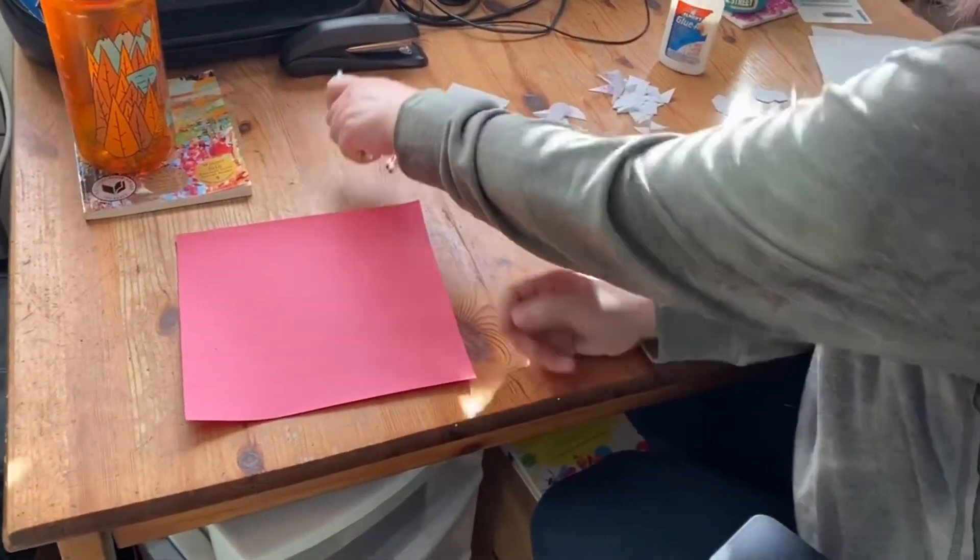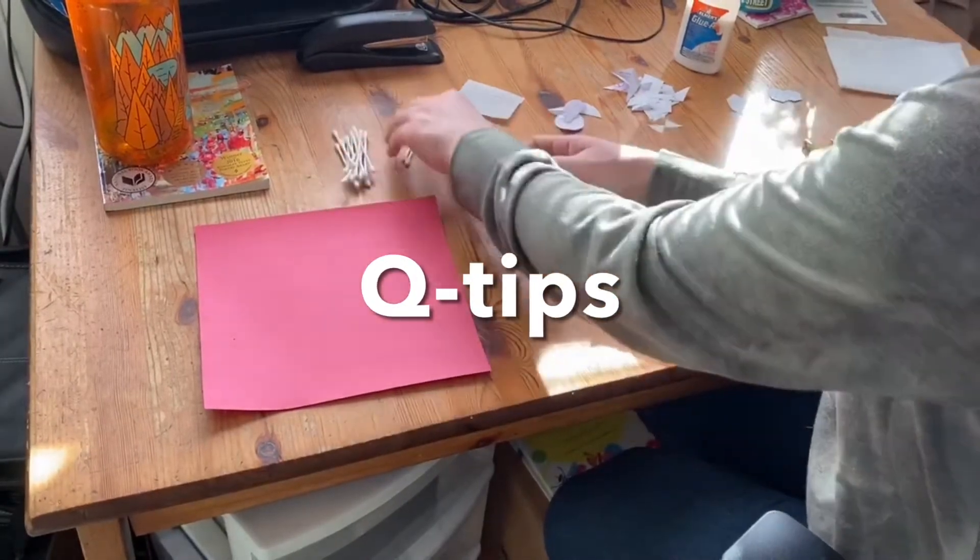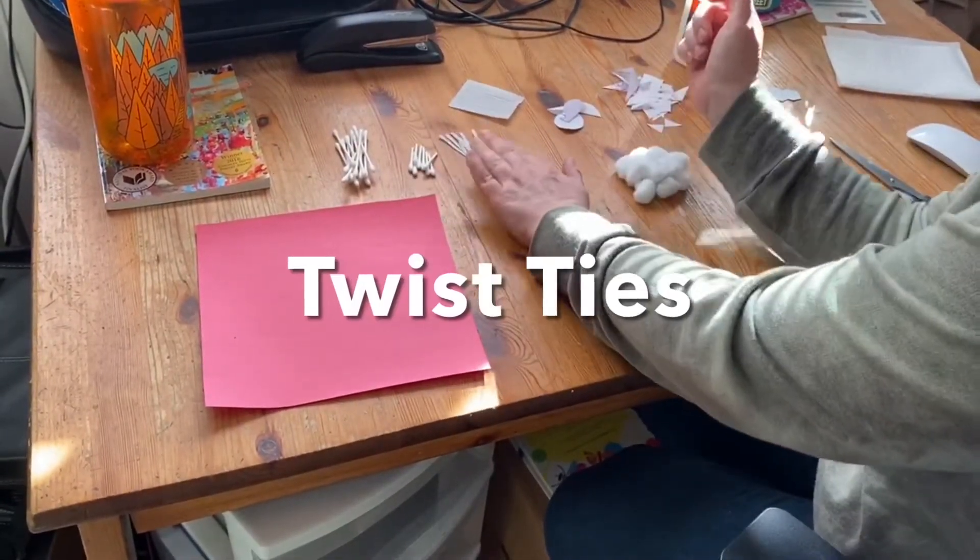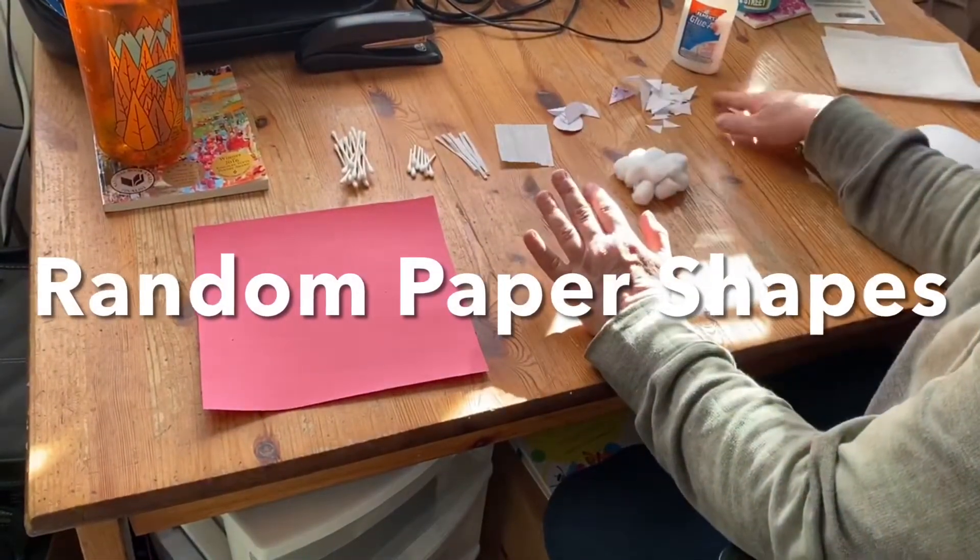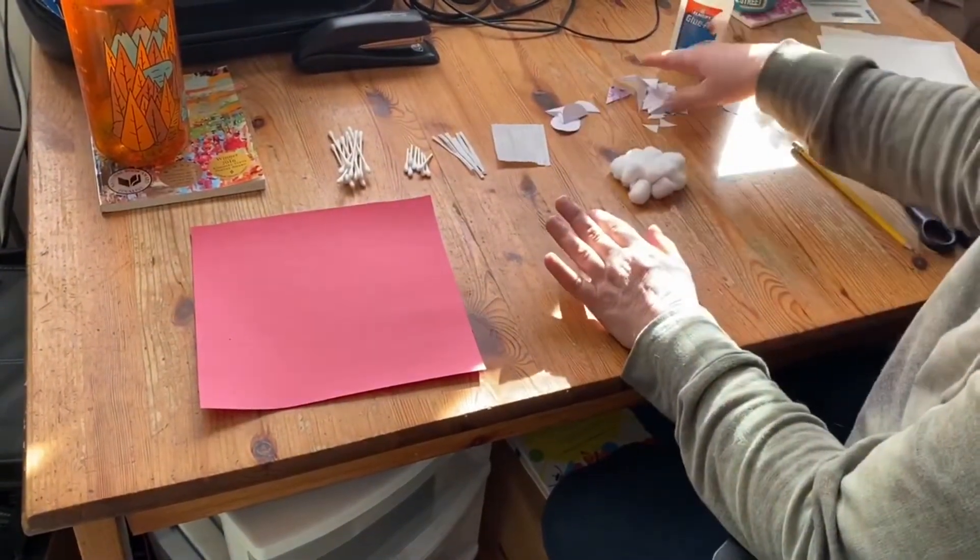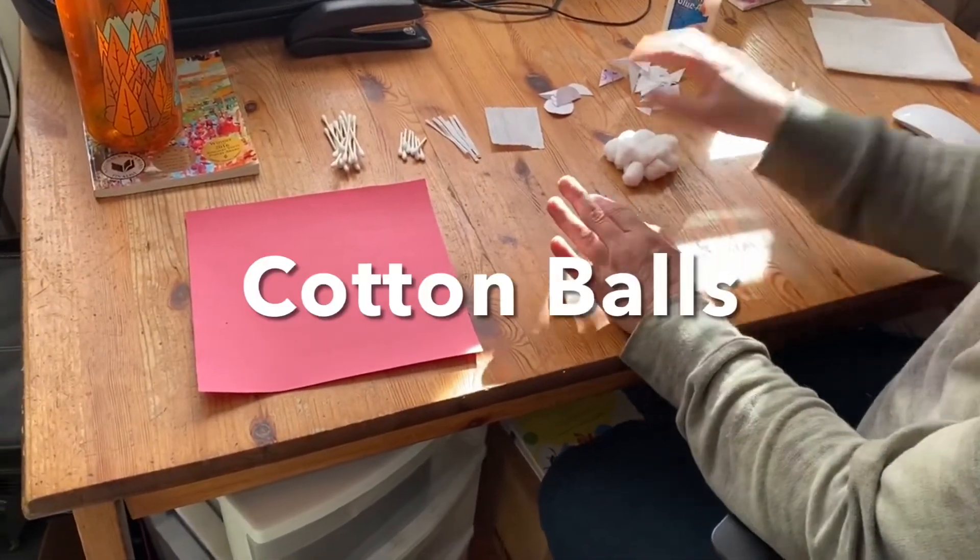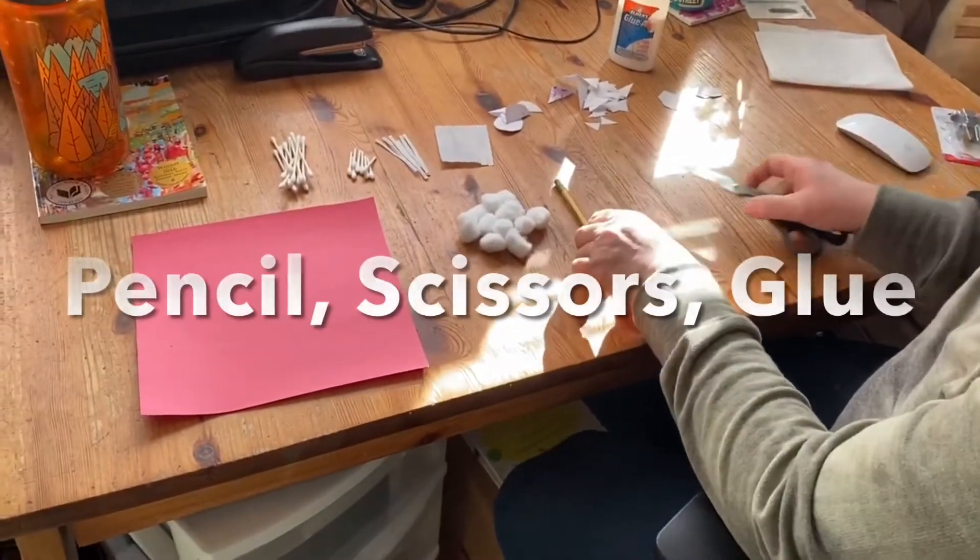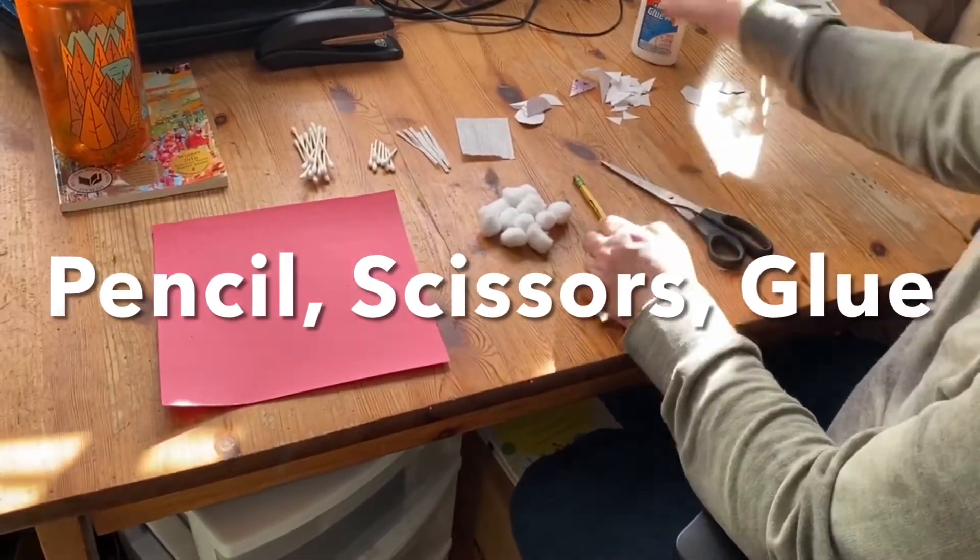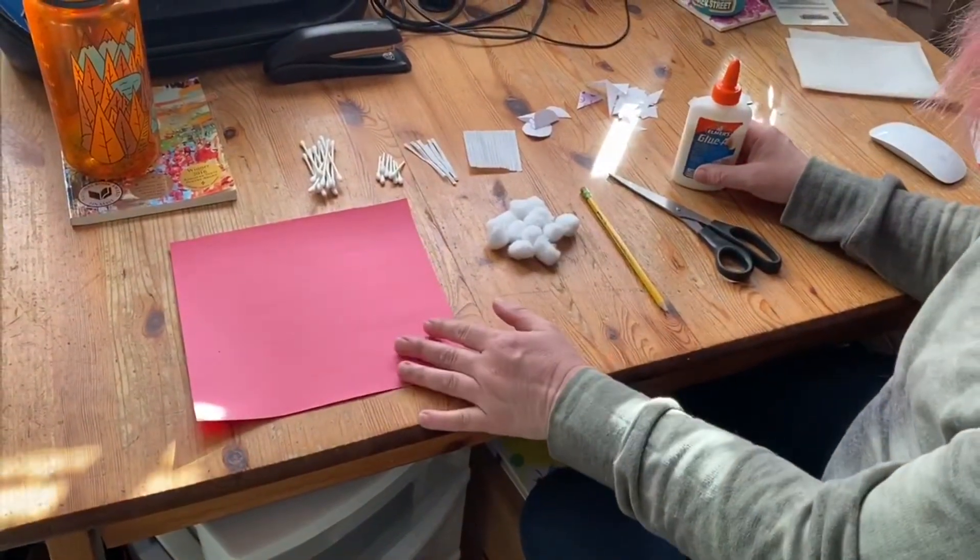We also have some q-tips and I've cut some in half. We've got twisty ties and I have some random shapes cut out of paper. So I've got some circles, some triangles, and hexagons, cotton balls, and then of course our trusty pencil, scissors, and glue. So gather those materials and let's get started.